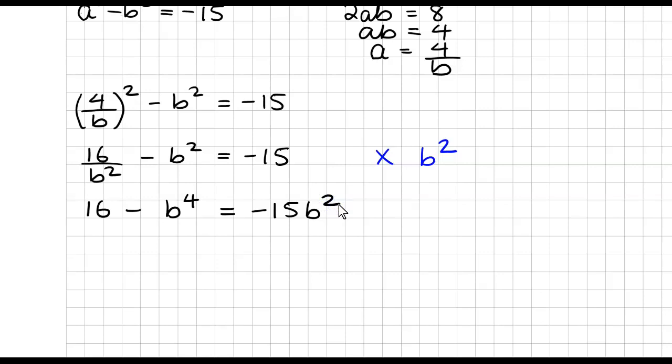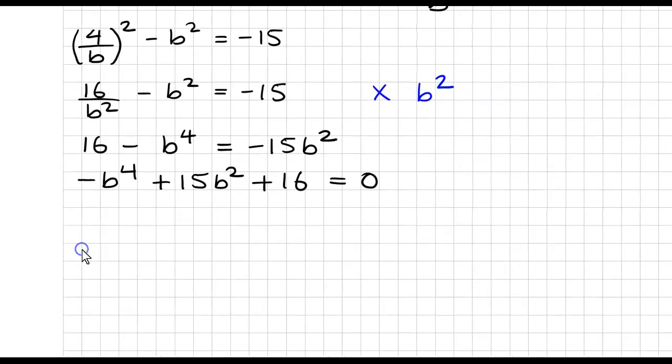Okay, now we need to write this as highest powers to lowest powers. So that'll be minus B to the 4 plus 15 B squared and plus 16 equal to 0. And then we'll just do a sign change, which will give us B to the 4 minus 15 B squared minus 16, which is equal to 0.